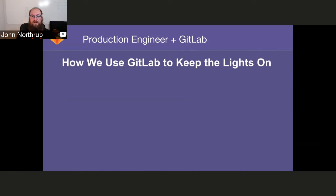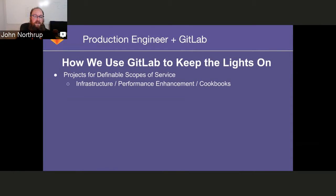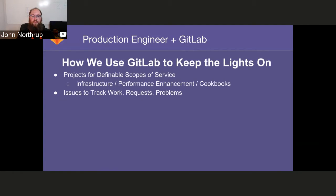How do we use GitLab to keep the lights on? First, we use it for all project definitions and scopes — we have projects for infrastructure, performance enhancements, and the cookbooks we use to manage the environment. Every definable scope has a project in GitLab. Within those, we use it to track work, requests, and problems — whether that's adding a server, onboarding a new employee, or something broken. We use issues to track all that and communicate with each other about status across our global team.